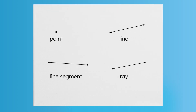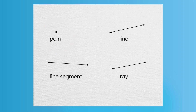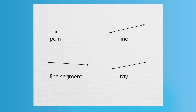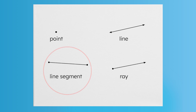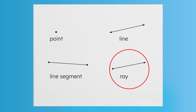Do your drawings look similar to mine? Make sure your point is just a single dot, an exact location. Now check out your line, line segment, and ray. Remember, they're all straight paths, but their ends are what make them different. Your line should have arrows at both ends, since it extends forever. The line segment should have endpoints on both sides, because it stops. And your ray should have one endpoint and one arrow, showing that it keeps going forever in one direction.